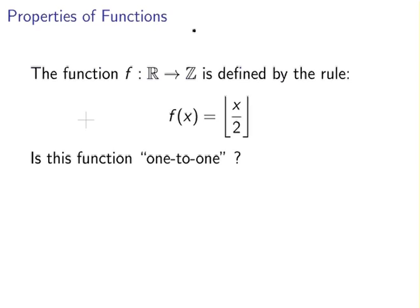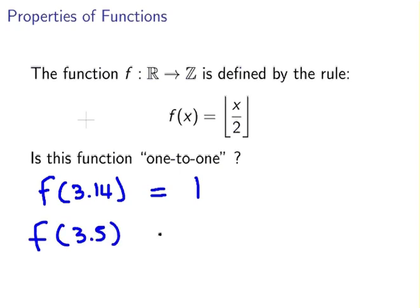Is this function one-to-one? Well previously we have seen the example of f of 3.14 evaluating to 1. If we were to evaluate 3.5, we would have the floor of 1.75 and that would also equal 1. So we have two different members of the domain, 3.14 and 3.5, but they both evaluate to the same member of the co-domain, the range.